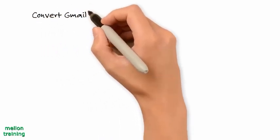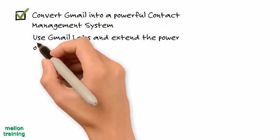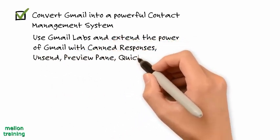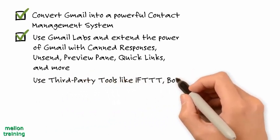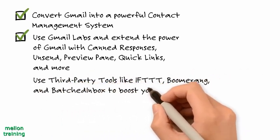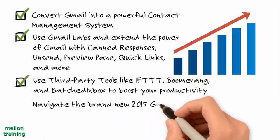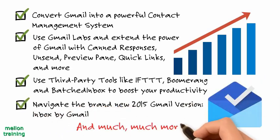Convert Gmail into a powerful contact management system. Use Gmail Labs and extend the power of Gmail with canned responses, unsend, preview pane, quick links and more. Use third party tools like IFTTT, Boomerang and Batched Inbox to boost your productivity. Navigate the brand new 2015 Gmail version, Inbox by Gmail and much, much more.